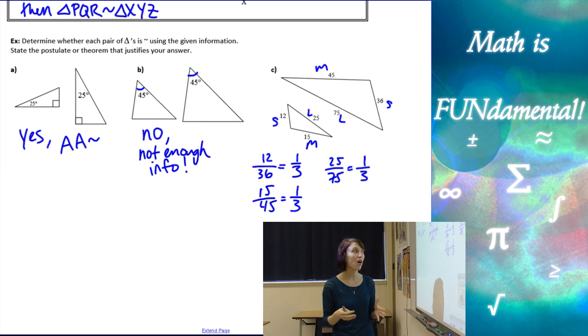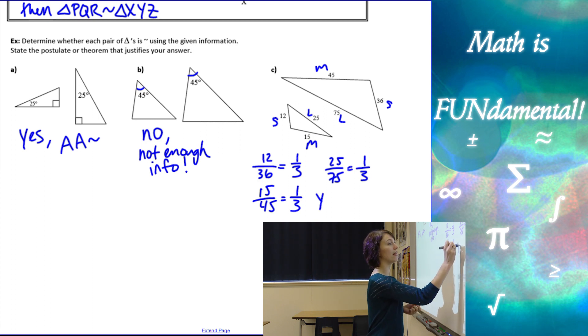So since all the ratios of the corresponding sides have the same ratio, so they simplify to the same number, the scale factor is one-third. Then these are similar by side-side-side similarity.